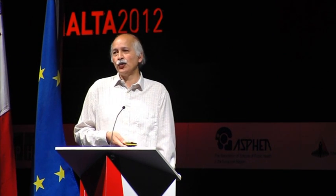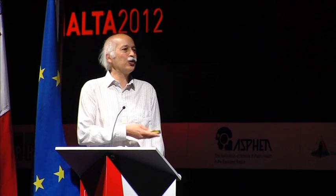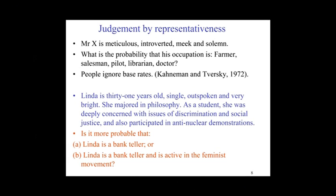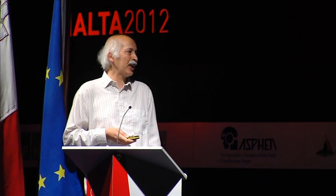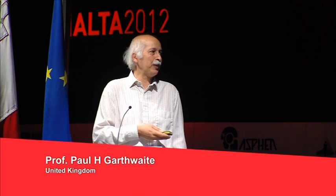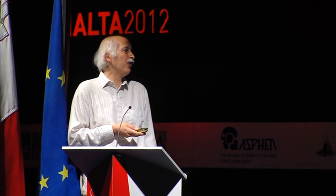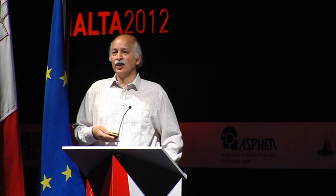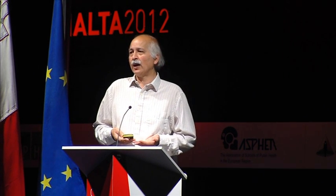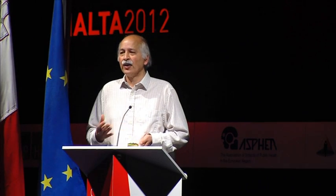The other even better-known example — if you Google 'Linda and bank teller' you get loads of references to it. Linda is described as 31 years old, single, outspoken, and interested in social justice. You ask: what's the chance she's a bank teller, and what's the chance she's a bank teller and in the feminist movement? People think B is more likely than A even though if Linda falls in category B she must fall in category A, so A must be more likely. These are things which upset people's judgments. Other features which cause problems include recency: if there's been an air crash, people over-assess the probability of another air crash.